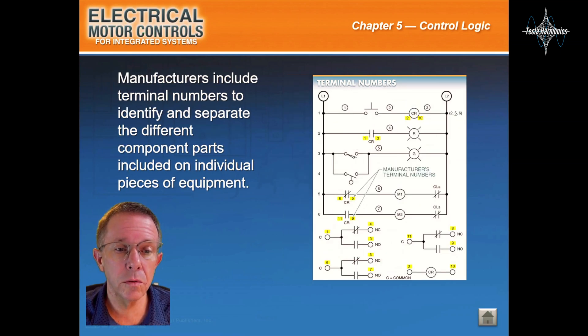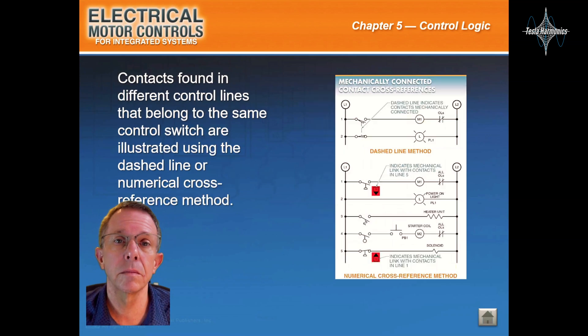Manufacturers include terminal numbers to identify and separate the different component parts included on individual pieces of equipment. Contacts found in different control lines that belong to the same control switch are illustrated using the dashed line or numerical cross-reference method.